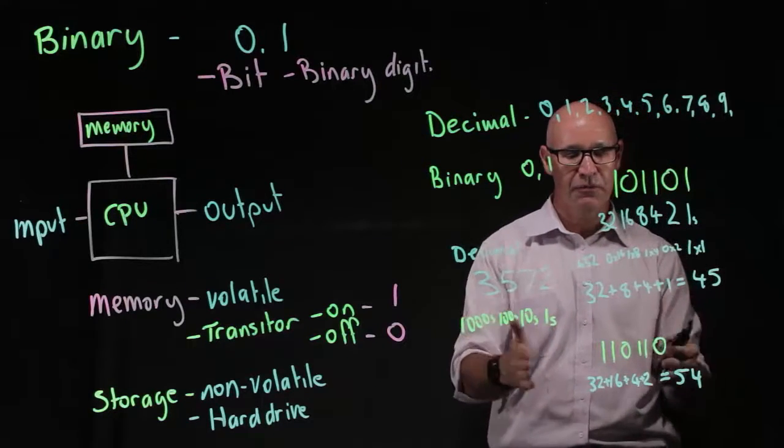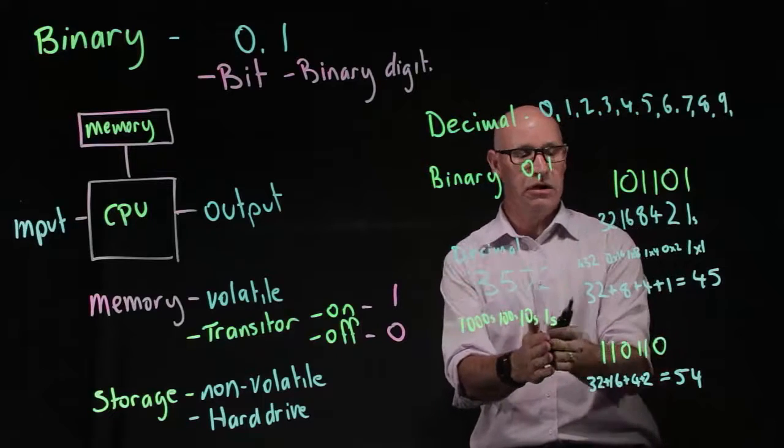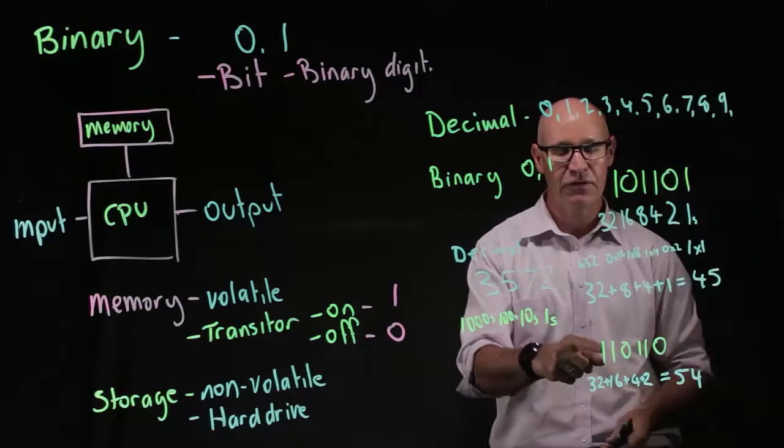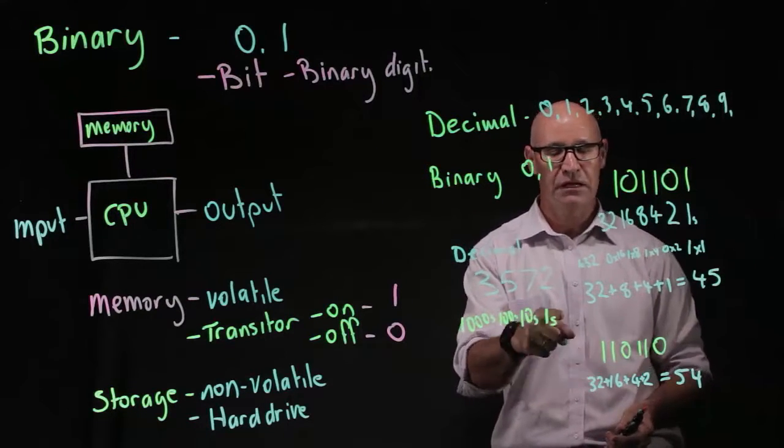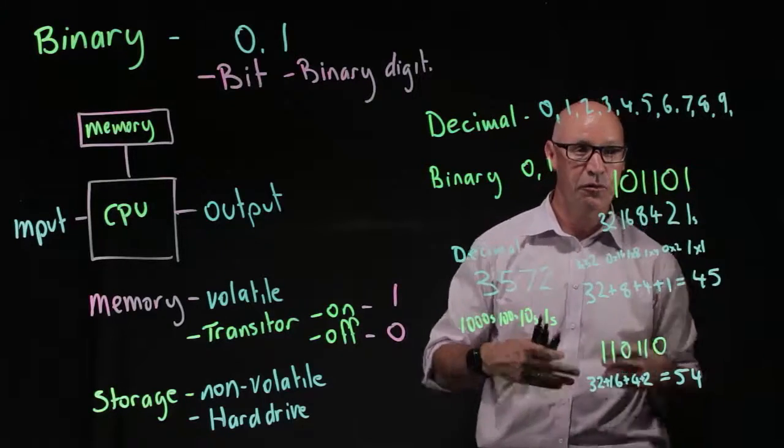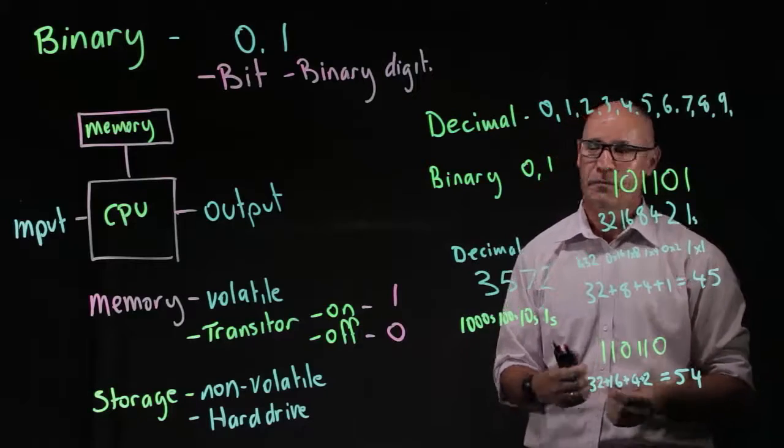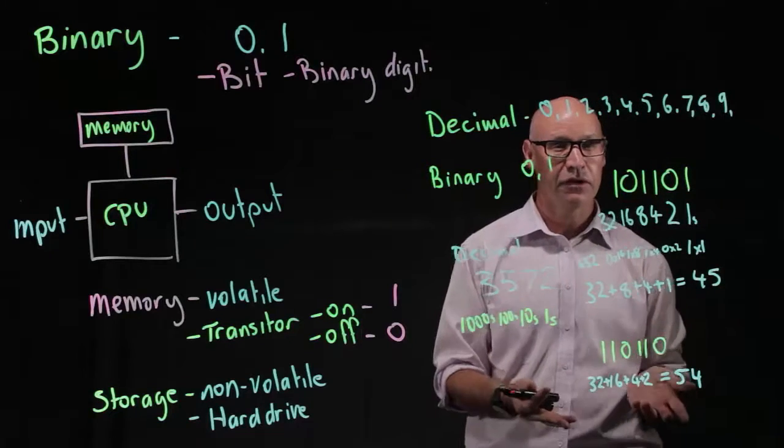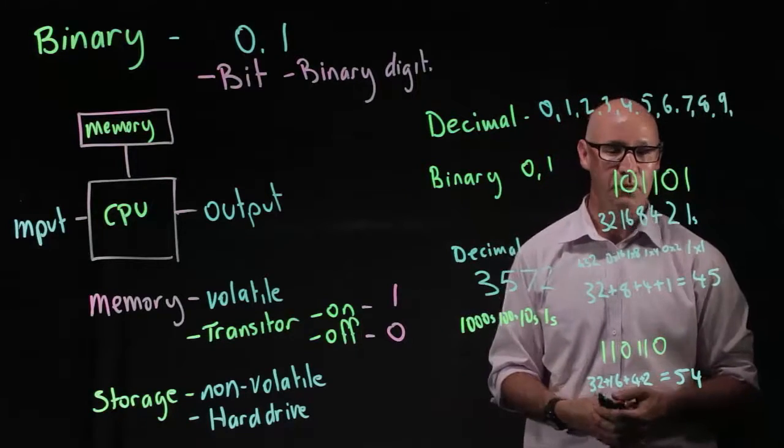And for larger and larger numbers, we just have larger, more numbers here. So then we'd have a 64 column, et cetera. We can also use binary to express the alphabet and also other characters that we use in computing as well.